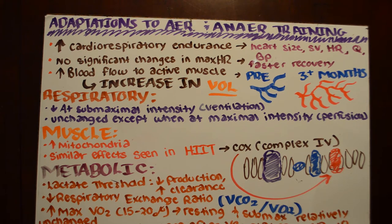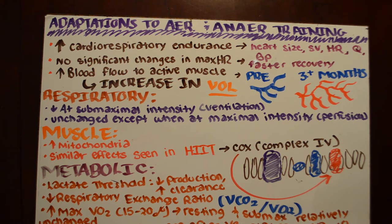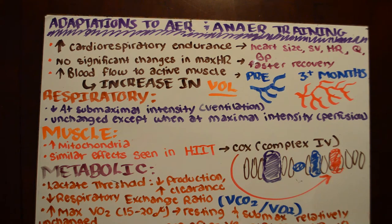Perfusion goes hand-in-hand with ventilation. Perfusion is just the exchange of oxygen between the muscle tissues and the blood. When exercising, blood goes to the heart and lungs, gets oxygenated, and comes back out. Perfusion is largely unchanged except at maximal intensity — at maximal intensity, perfusion is more efficient and oxygen is delivered to tissues more effectively. Below maximal intensity, we don't really see changes.